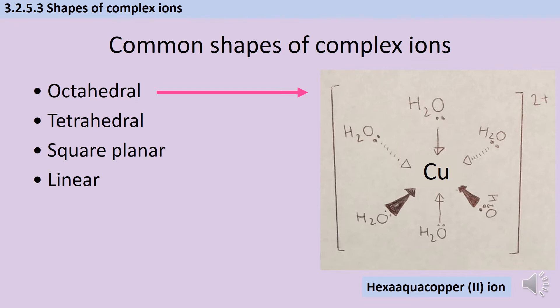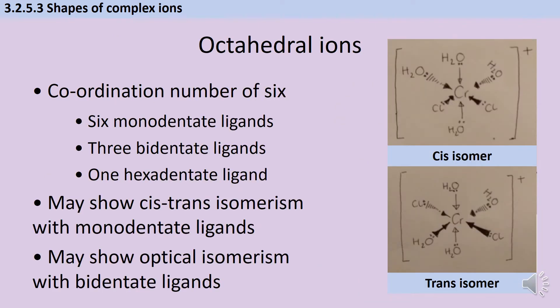So to start with, let's look at octahedral. As you know from the AS chemistry topic of shapes and molecules, where you have a single atom with six bonding pairs around that, that will form what we call an octahedral shape.